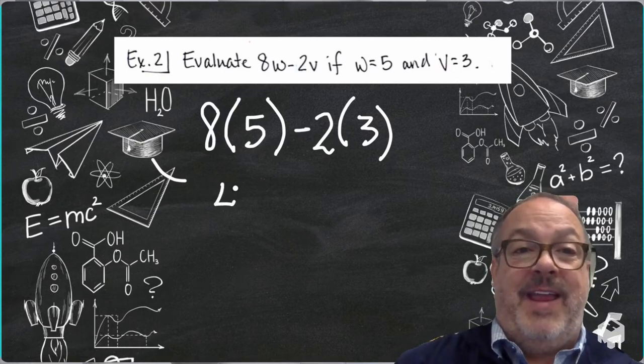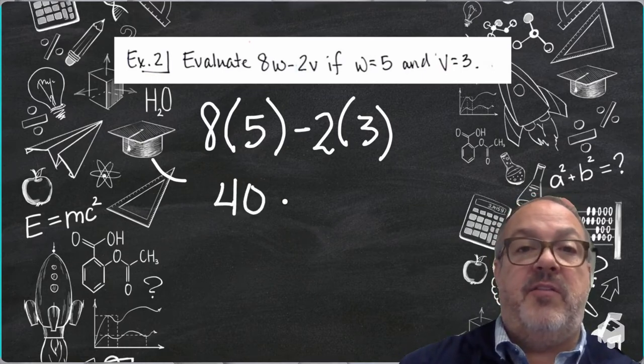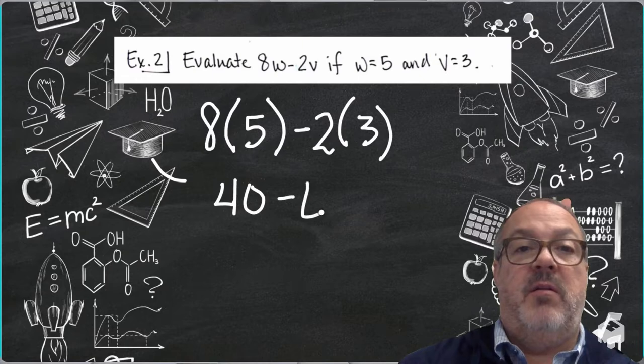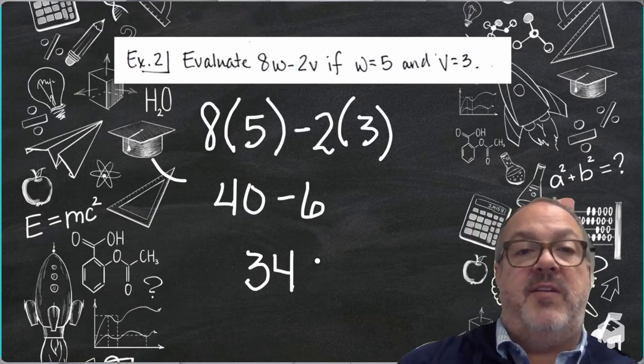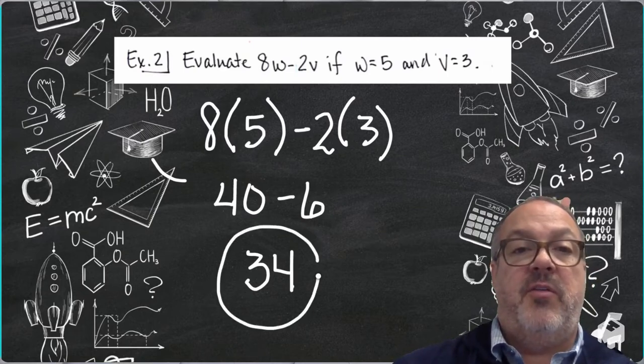So I'm going to rewrite it as 8 times 5 minus 2 times 3. So 8 times 5 is 40 minus 2 times 3, which is 6, and 40 minus 6 is 34.